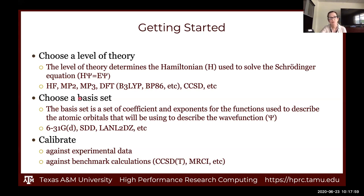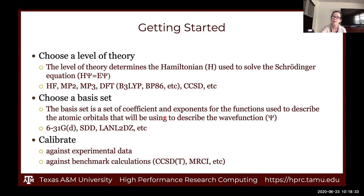You also have to choose something called a basis set. The basis set determines the mathematical form of the wave function used in the time-independent Schrödinger equation. Level of theory goes to the Hamiltonian; basis set goes to the wave function. It's a linear combination of atomic orbitals — the coefficients and exponents for the functions used to define the atomic orbitals which combine to make molecular orbitals. You'll see many acronyms: the Pople style basis set, Stuttgart, and a long list of others.